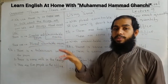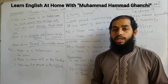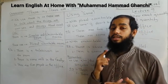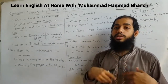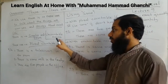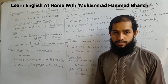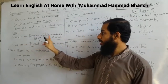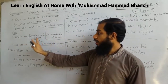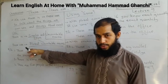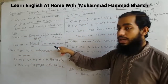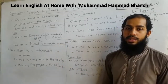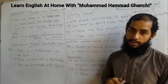Uncountable nouns include words like ink, water, and milk — things that are abstract or liquid. So the rule is: we use 'there are' with plural countable nouns, and we use 'there is' with singular countable nouns or uncountable nouns.